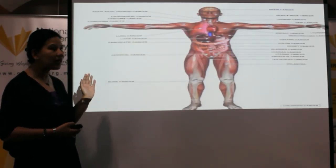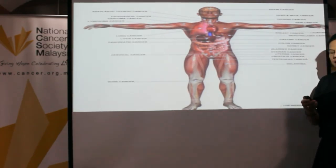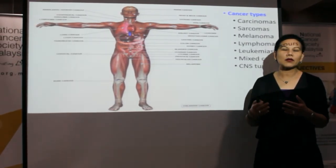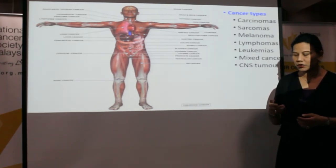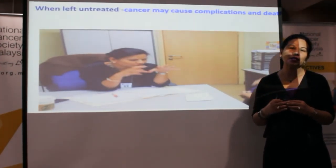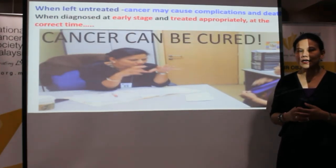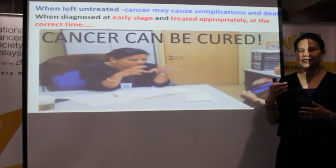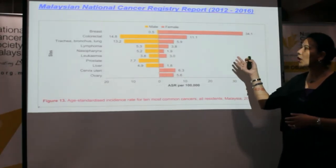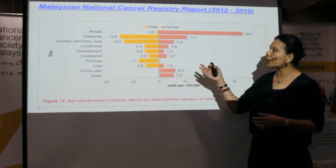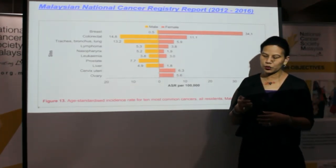Cancer can happen in any part of the body. Generally, cancer types can be divided into carcinomas, sarcomas, adenomas, lymphomas, and others. If cancer is left untreated or treated incorrectly, it can cause complications and death — but if diagnosed early and treated appropriately, it can be cured. According to Malaysia's national cancer registry, the top three cancers in females are breast, colorectal, and lung; in males, colorectal, lung, and lymphoma.